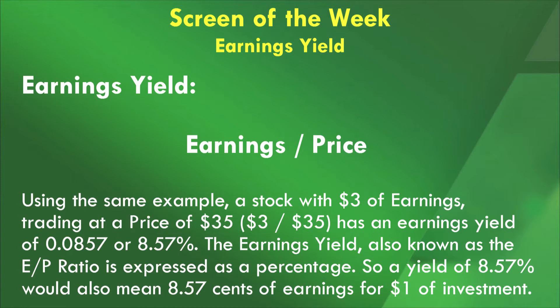The earnings yield calculation is reversed — it's earnings divided by price. Using the same example, a stock with $3 of earnings trading at $35: three divided by 35 gives an earnings yield of 0.0857, or 8.57%. The earnings yield is also expressed as the EP ratio, and a yield of 8.57% also means 8.57 cents of earnings for every $1 investment.